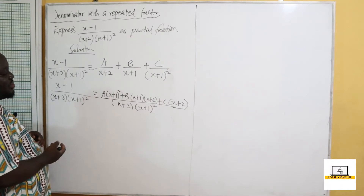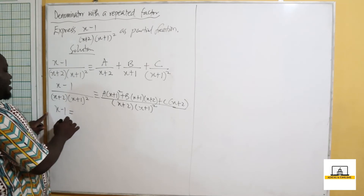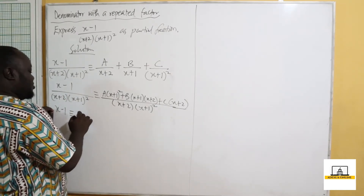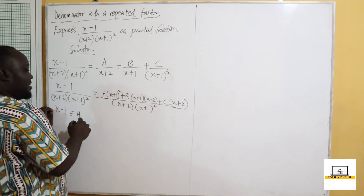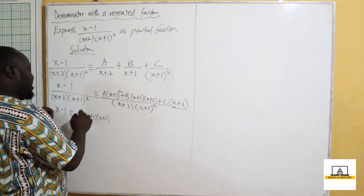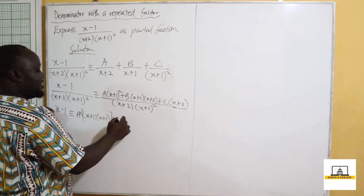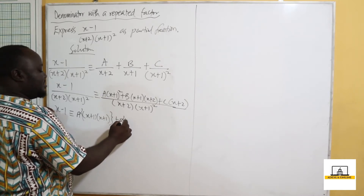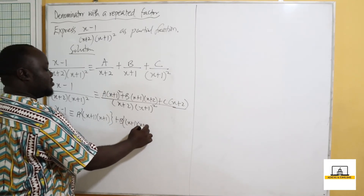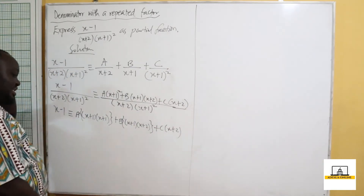Since the denominators are equal, the numerators are equal. So x minus 1 is equivalent to A times (x+1)², plus B times (x+2)(x+1), plus C times (x+2). Now let's expand these expressions.